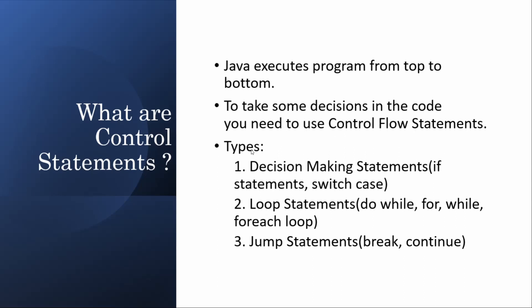Control statements are defined in three types. One is decision making statements, which consists of if statements and switch case. Second is loop statements — there are three or four types of loops. And the third one is jump statements: break and continue. Let's go and see each one.